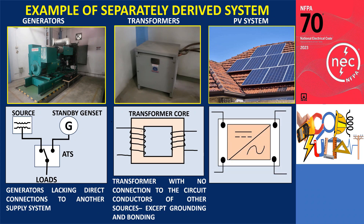Additionally, any other power sources that lack direct connections with other sources — such as photovoltaic (PV) systems and battery converter windings — also fall under this category.